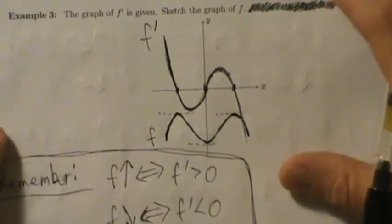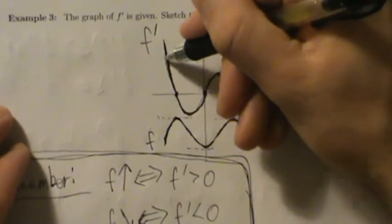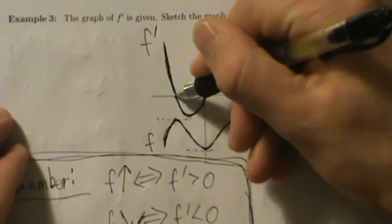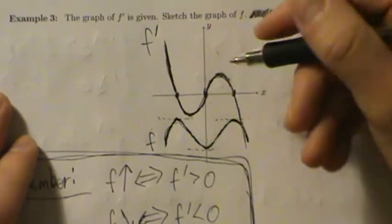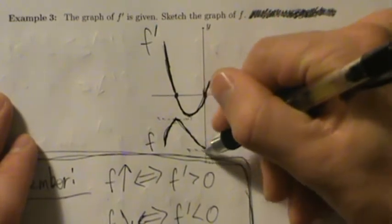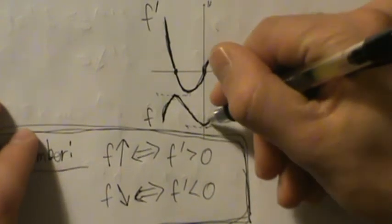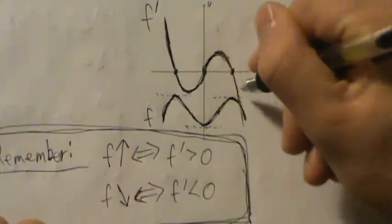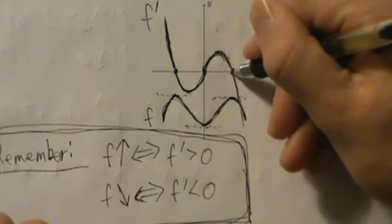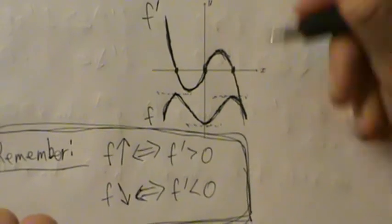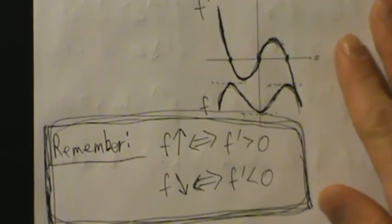The important thing here is just keep this in mind: f' is positive, so f is increasing. f' is 0, so f has a horizontal tangent line. f' is negative, so f is decreasing. f' is 0, so f has a horizontal tangent line. f' is positive, so f is increasing. f' is 0, so f has a horizontal tangent line. And then lastly, f' is negative, so f is decreasing. That's example 3 with curve sketching — more examples coming up.